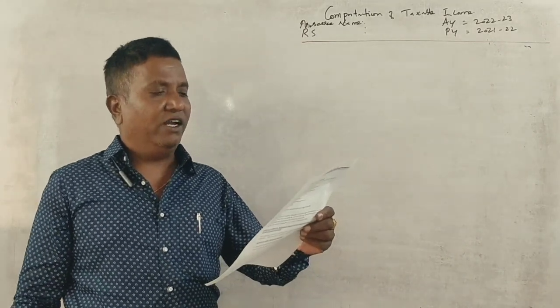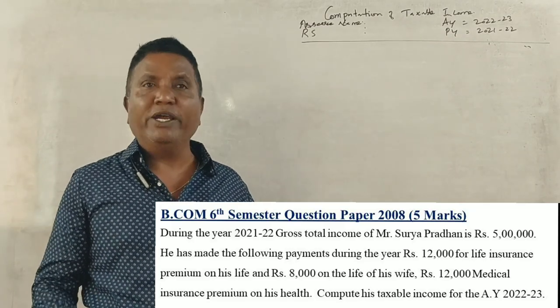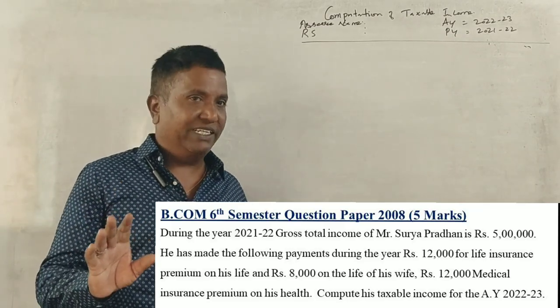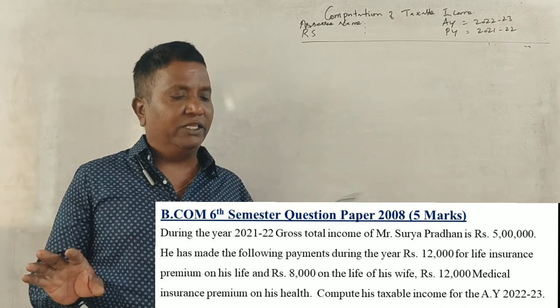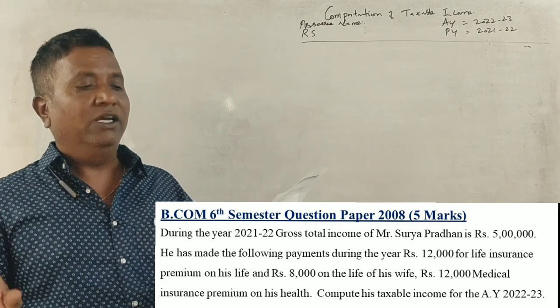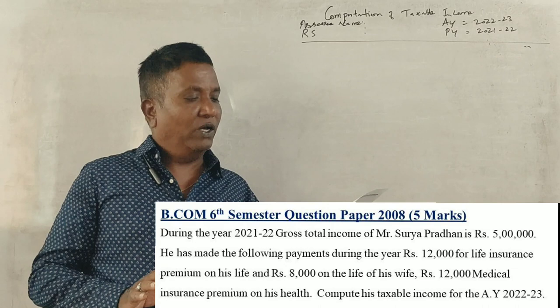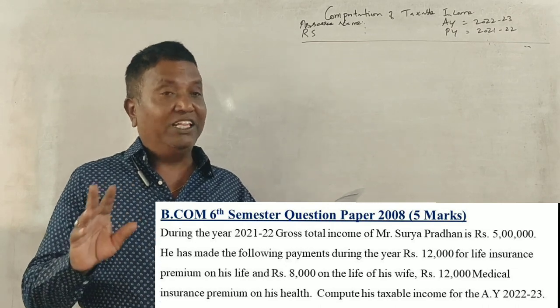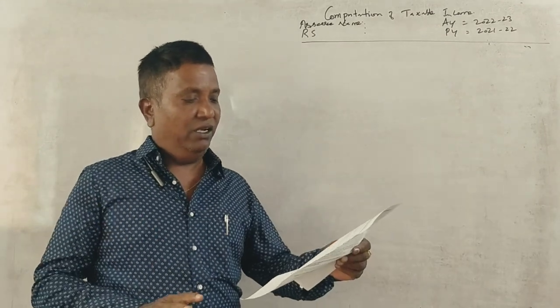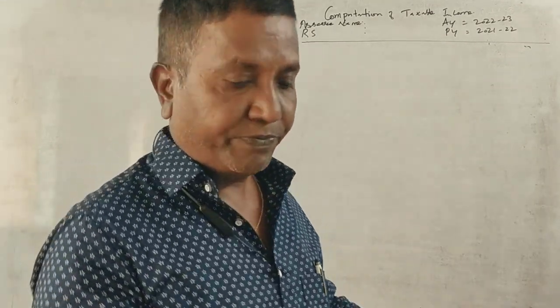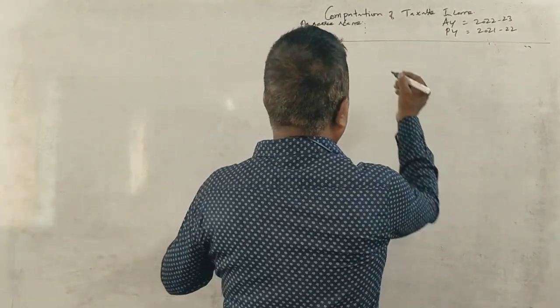During the year 2021-2022, gross total income of Mr. Surya Pradaan is 5 lakhs. He has made the following payments during the year: 12,000 rupees life insurance premium on his life, 8,000 rupees on his wife's life, and 12,000 rupees medical insurance premium on his health. Compute the taxable income. This will take only 5 to 10 minutes.